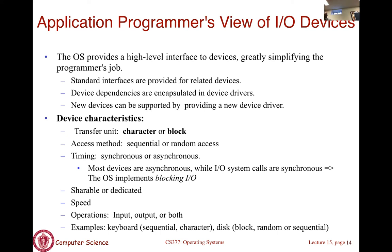With these three methods in mind — polling, interrupt-based, and DMA-based communication — let's look at some other services and abstractions that an OS is going to provide. The OS provides a much higher-level abstraction of devices, with lower-level details encapsulated in the device driver, and the device-independent layer using even higher-level abstractions to read or write to these devices.